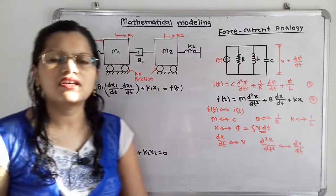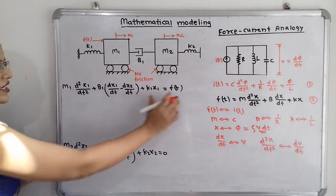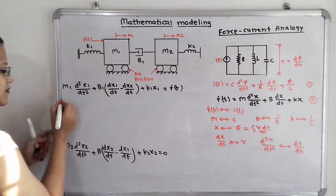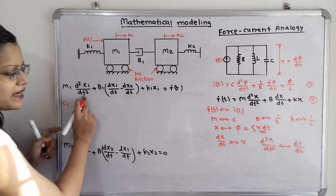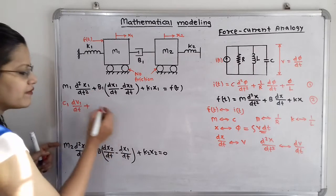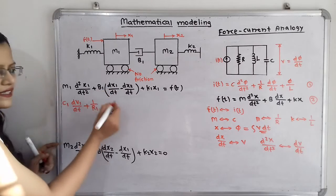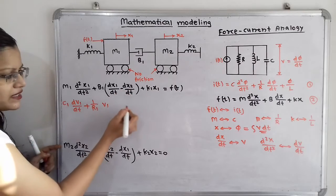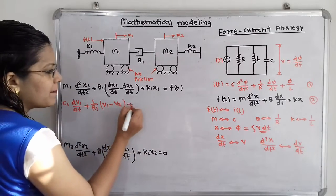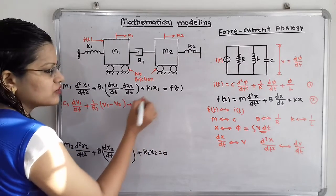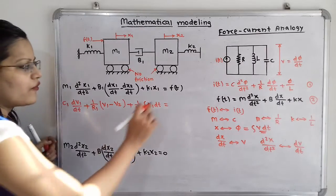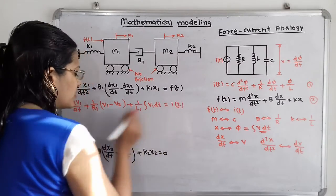Now we will apply these substitution rules to the two differential equations. Applying to the first equation: C1 dV1/dt + (1/R1)(V1 − V2) + (1/L1)∫V1 dt = I(t). Here, we take care of the suffixes: M1 becomes C1, d²X1/dt² becomes dV1/dt; B1 becomes 1/R1 with (dX1/dt − dX2/dt) becoming (V1 − V2); K1 becomes 1/L1 with X1 becoming ∫V1 dt; and F(t) becomes I(t).